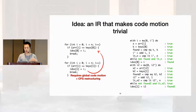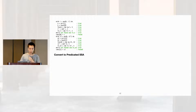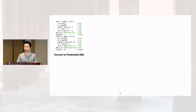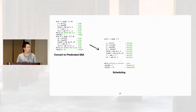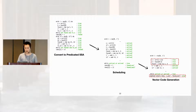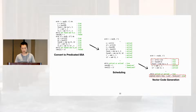Before going into details, here's our plan for using this IR. Before vectorization, we first convert the input program into this new representation called predicated SSA. Inside this representation, we identify instruction sequences that are both independent and isomorphic, then reorder those instructions so they are grouped together while preserving all data and control dependencies, which may require revising some predicates. Finally, we pack them into equivalent vector instructions.